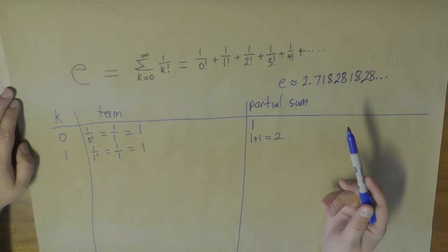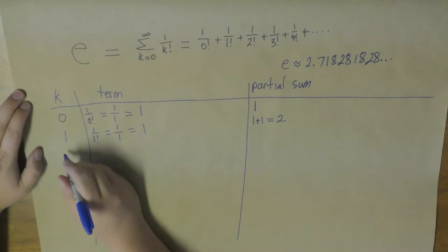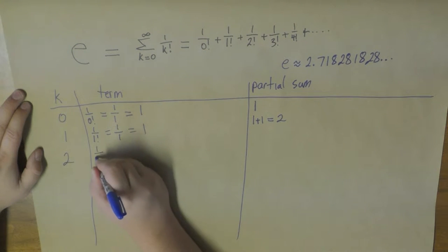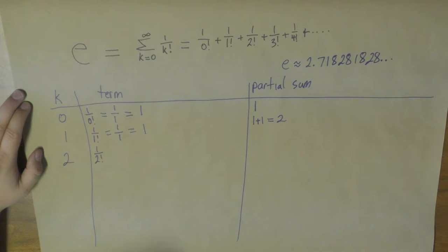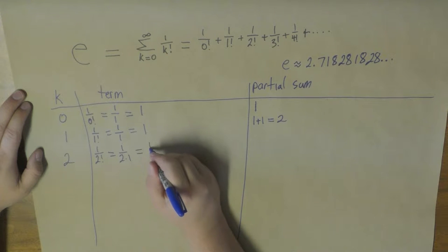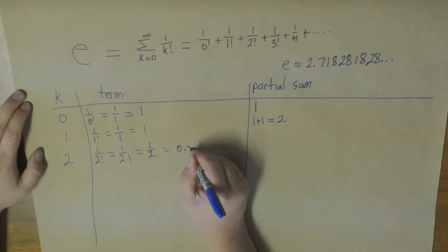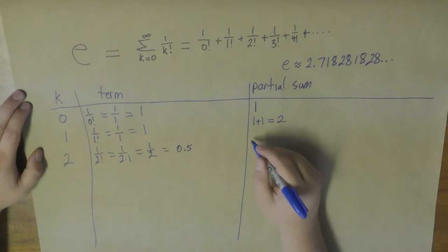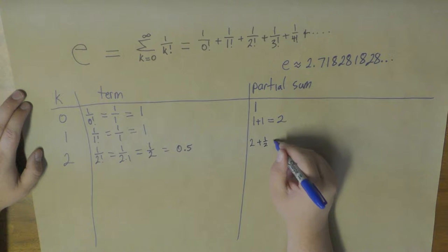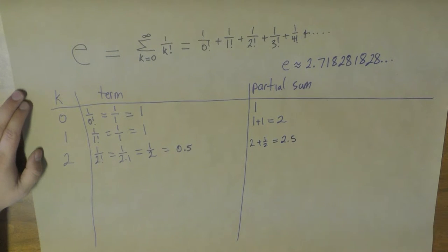So after k equals 1, our approximation is 2, which doesn't seem very good — it's off by 0.718 and so on. Well, let's look at k equals 2. That's 1 over 2 factorial, which is 1 over 2 times 1, which ultimately gives you 1 half, which is 0.5. So that gives us 2 plus 1 half, which is 2.5. As you can see, this is closer — it's only off by 0.2 and change.